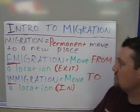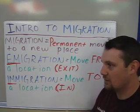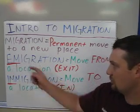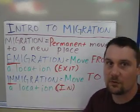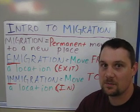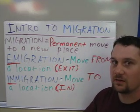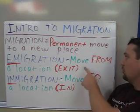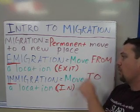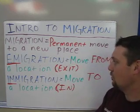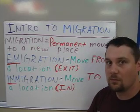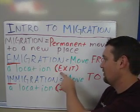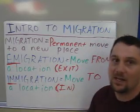There are two types of migration that we need to talk about. The first is emigration — I've underlined the E-M for a reason, because this will be referred to in this way later in the presentation. Emigration means a move from a location. If you want to help remember this, you can think of it as exiting — people exiting. You have an E in exit and an E in emigration.